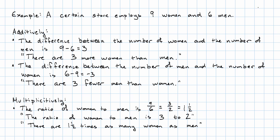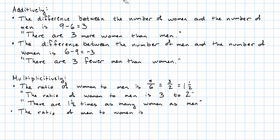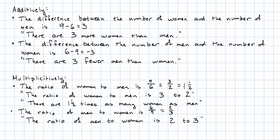What if we did this the other way around? We could say the ratio of men to women — that's going to be six men to nine women. Simplifying that, we get two thirds. So we could say, using the word ratio, that the ratio of men to women is two to three.